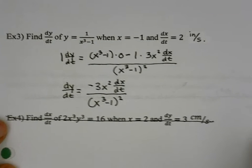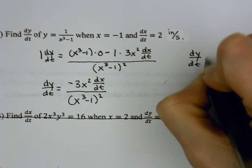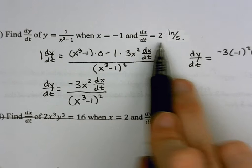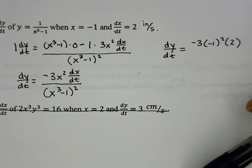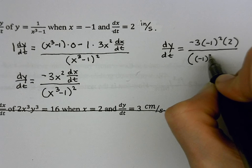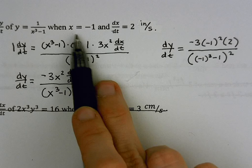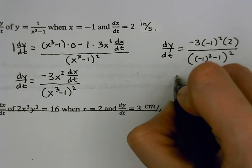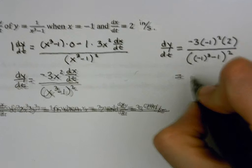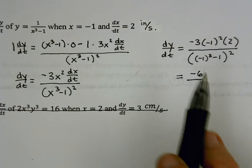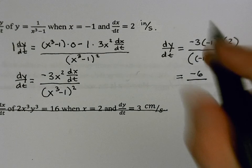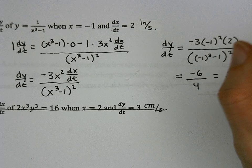Now we plug in. x = −1 and dx/dt = 2. So we get −3(−1)²·(2) over (−1)³ − 1)². Negative one squared is 1, so −3 times 1 is −3, times 2 is −6. In the denominator: −1 cubed is −1, minus 1 is −2, and −2 squared is 4. So our answer is −6/4, which simplifies to negative three-halves inches per second.